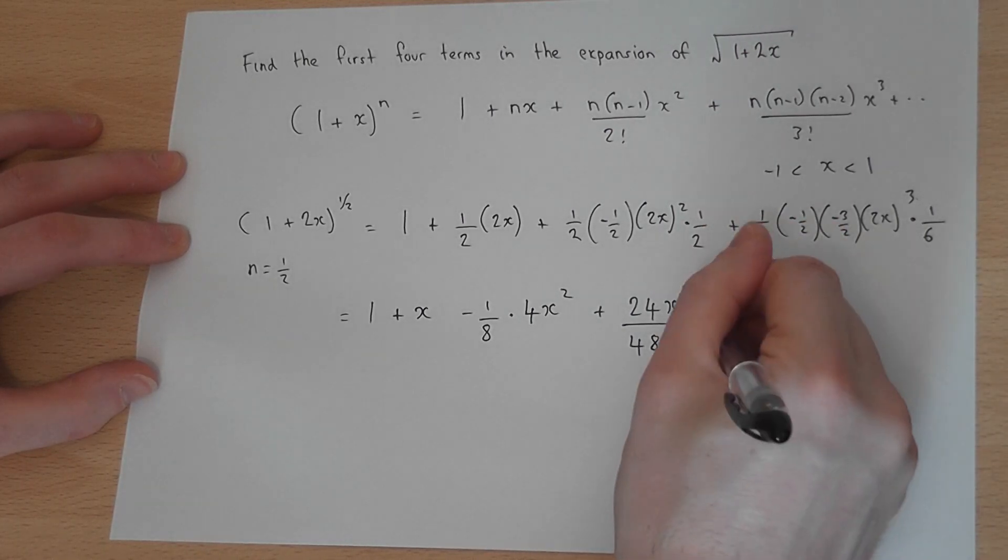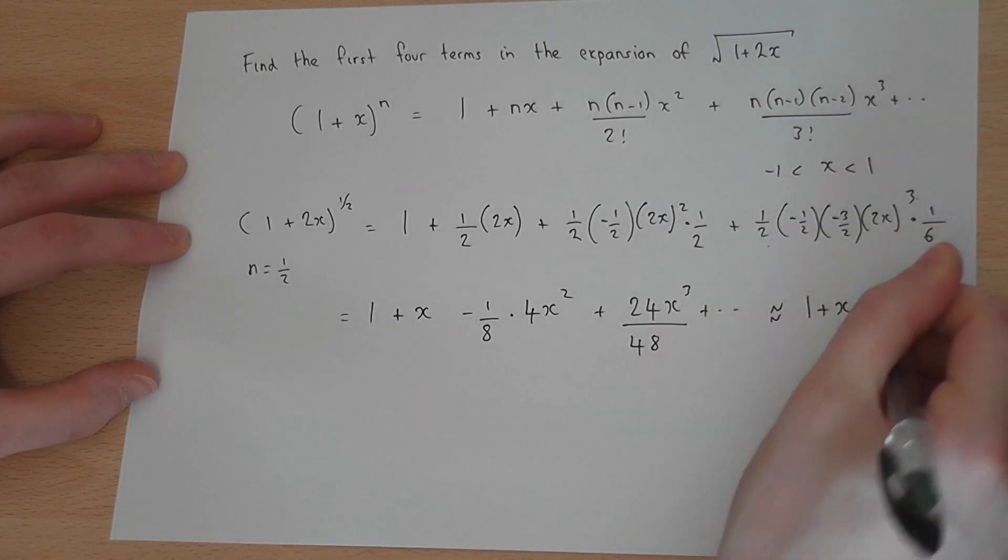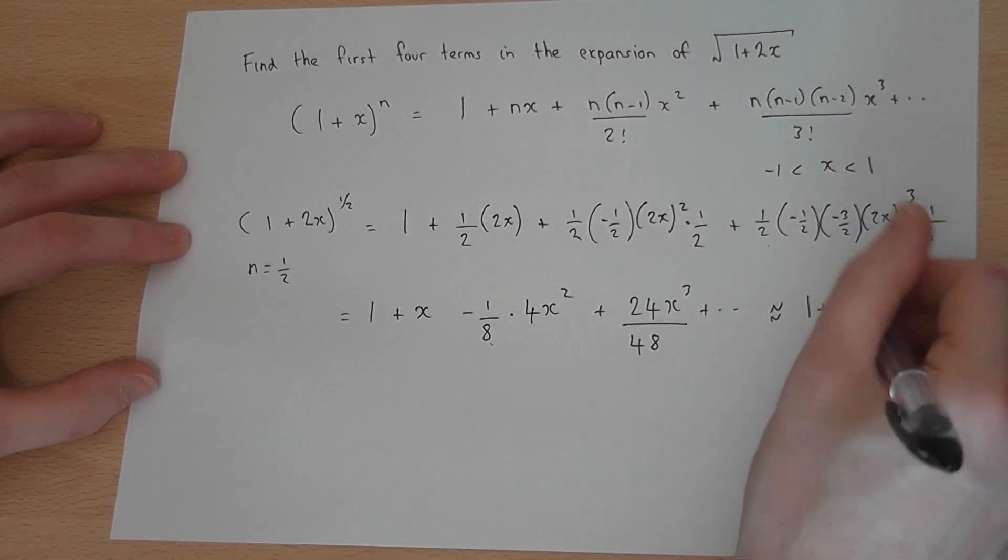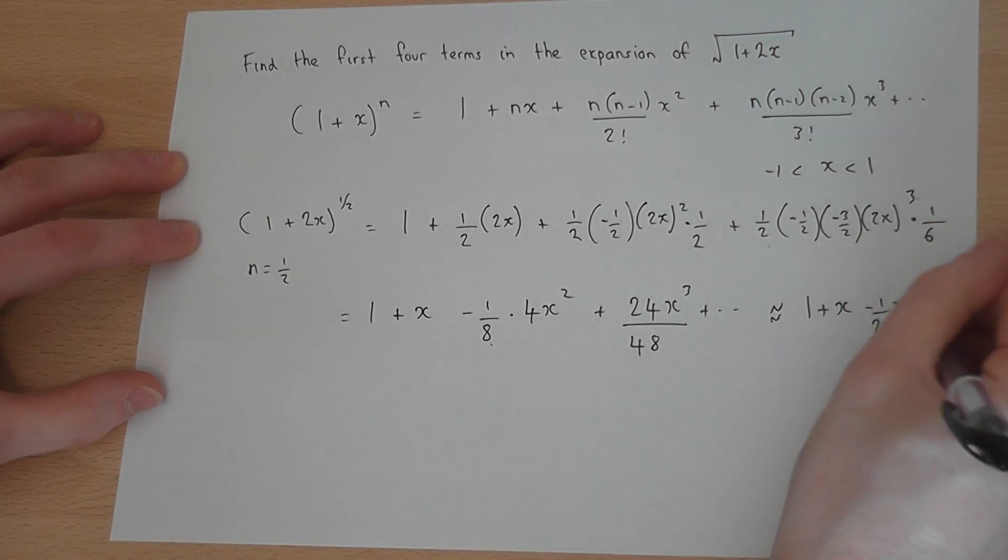So that's approximately 1 plus x, 4 eighths is a half, minus a half x squared, plus a half x cubed.